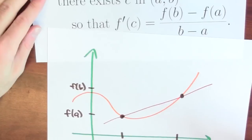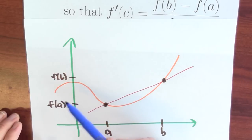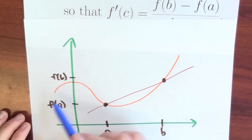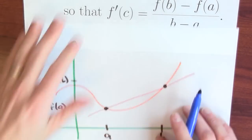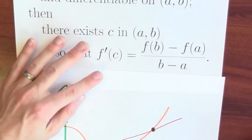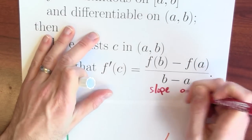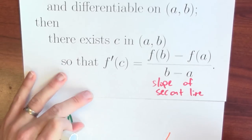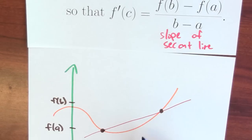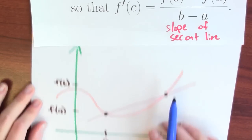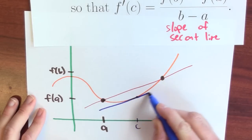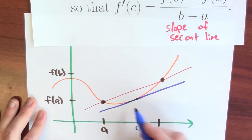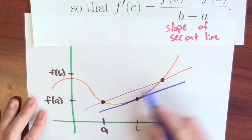We can take a look at this from a graph as well — it might help even more. Here's the graph of some function I've made up. I've picked points a and b, and it's certainly a nice enough function — continuous and differentiable. Here's f(a) and f(b), and I've drawn this red line that connects the point (a, f(a)) and (b, f(b)). The slope of that line is exactly what this quantity calculates — the slope of that secant line. The theorem asserts the existence of some point in between where the derivative has the same value as the slope of this secant line. Maybe that point is here, and if I draw a tangent line to the curve at that point, the slope of that tangent line — which is the derivative at point c — is the same as the slope of that red secant line.